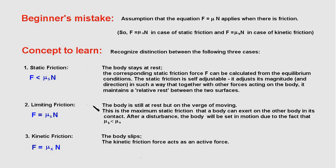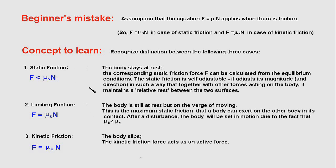Static friction is self-adjustable both in magnitude and direction, maintaining relative rest between two surfaces. The second case is limiting friction: the body is still at rest but on the verge of moving, in which case frictional force reaches its maximum value μs × N. When the body slips, kinetic friction comes into play and the force is μk × N. If a problem gives a single coefficient of friction μ, you can treat μs and μk as the same. The key concept: limiting friction only applies when motion is impending, and friction is less than μN when the body is in equilibrium — calculated only from equilibrium conditions.